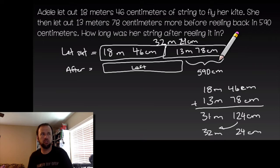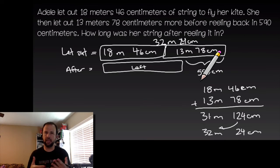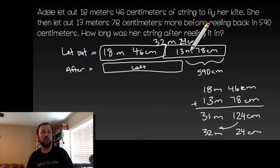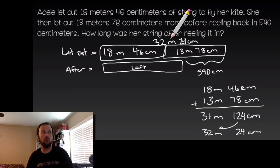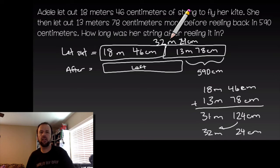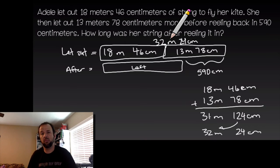Now we need to subtract the 590 centimeters she reeled back in from 32 meters 24 centimeters. I know I can't take 590 away from 24, so I'll need to think about the best approach. I'm going to let you guys think about how to do it and I'll do it my way, then we'll come back and compare methods.